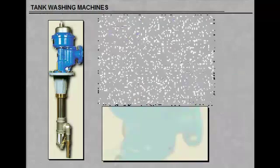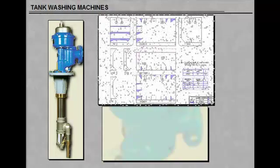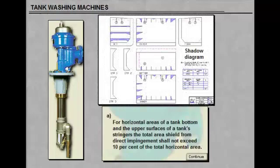For horizontal areas of a tank bottom and the upper surfaces of a tank stringers, the total area shielded from direct impingement shall not exceed 10% of the total horizontal area.